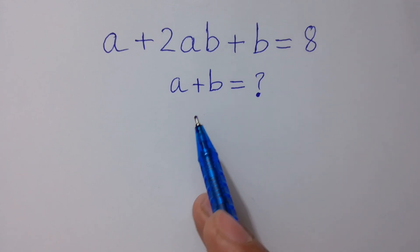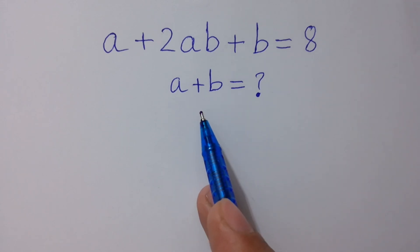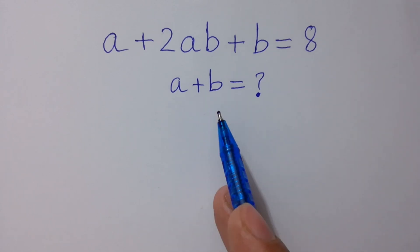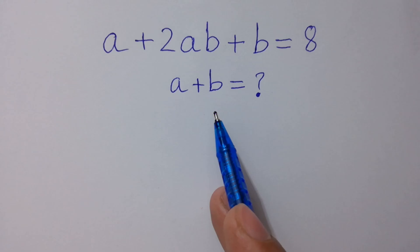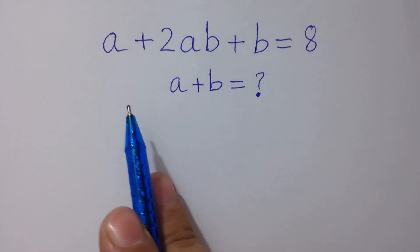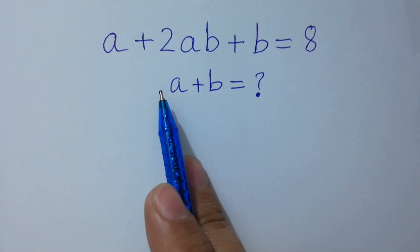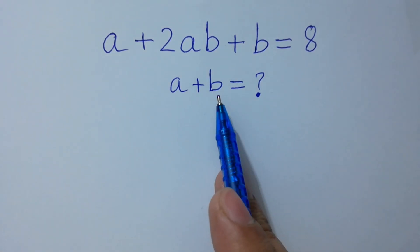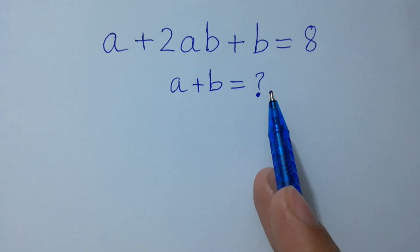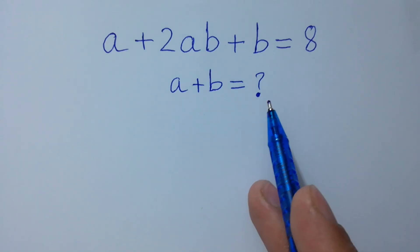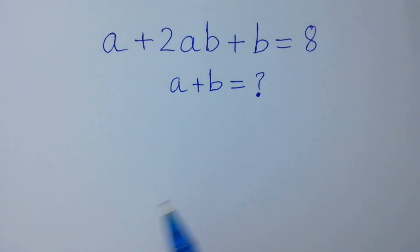Hello friends, find the value of a plus b if √a plus 2√(ab) plus √b equals 8. Let's have a solution here.